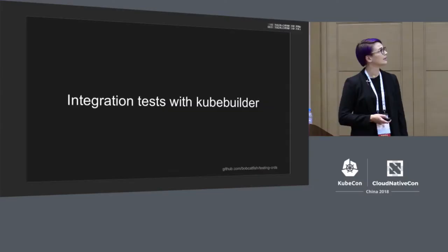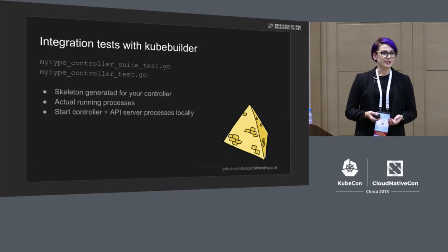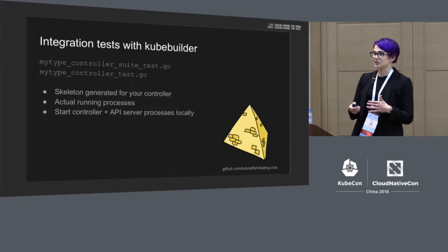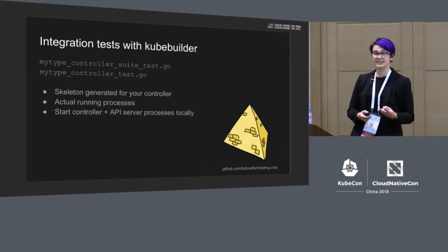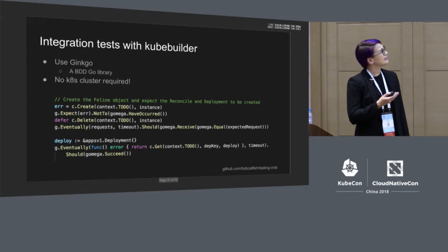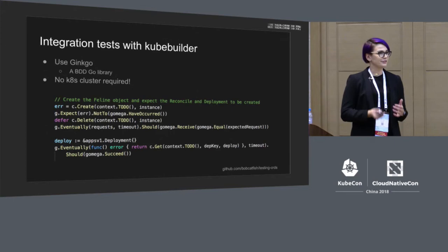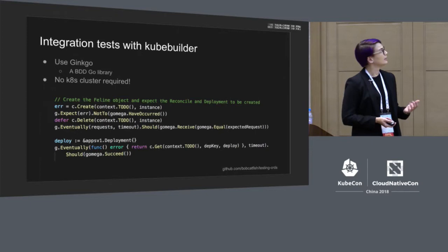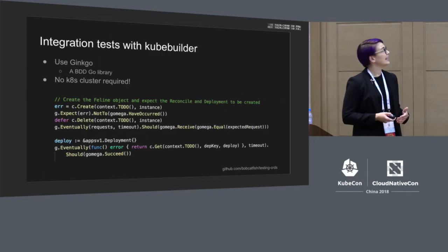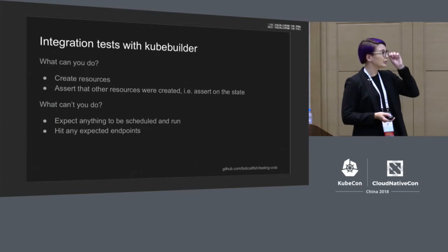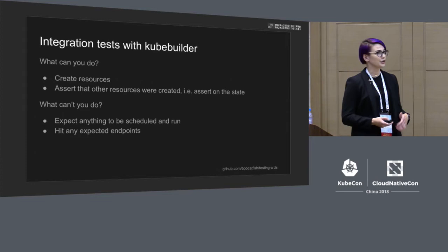Let's look at KubeBuilder-based integration tests. If you use KubeBuilder to initialize your project, it actually generates integration tests for you. You still have to fill in all the assertions, but it creates all the setup and teardown. It runs processes locally — an instance of each of your controllers, an instance of the API server, and an etcd instance. The generated code uses Ginkgo, a BDD testing library. In this example, we create an instance of our CRD of type 'feline' and wait for the controller to create a corresponding deployment. The cool thing is we can do this without requiring a Kubernetes cluster, though we can't assert on things like containers actually running and hitting an endpoint — that would go in end-to-end tests.